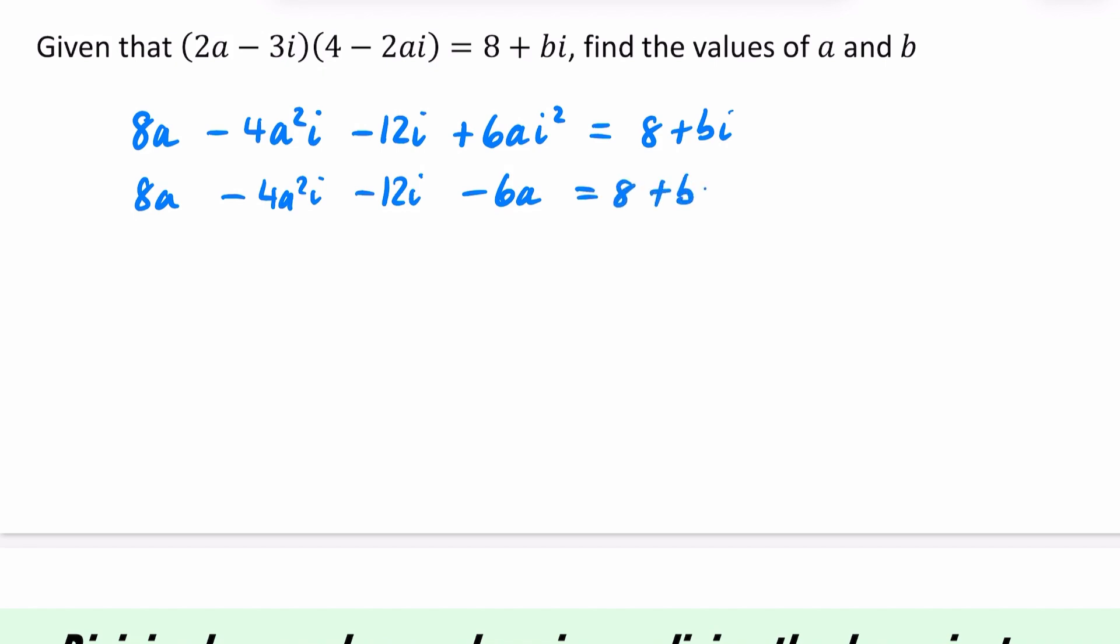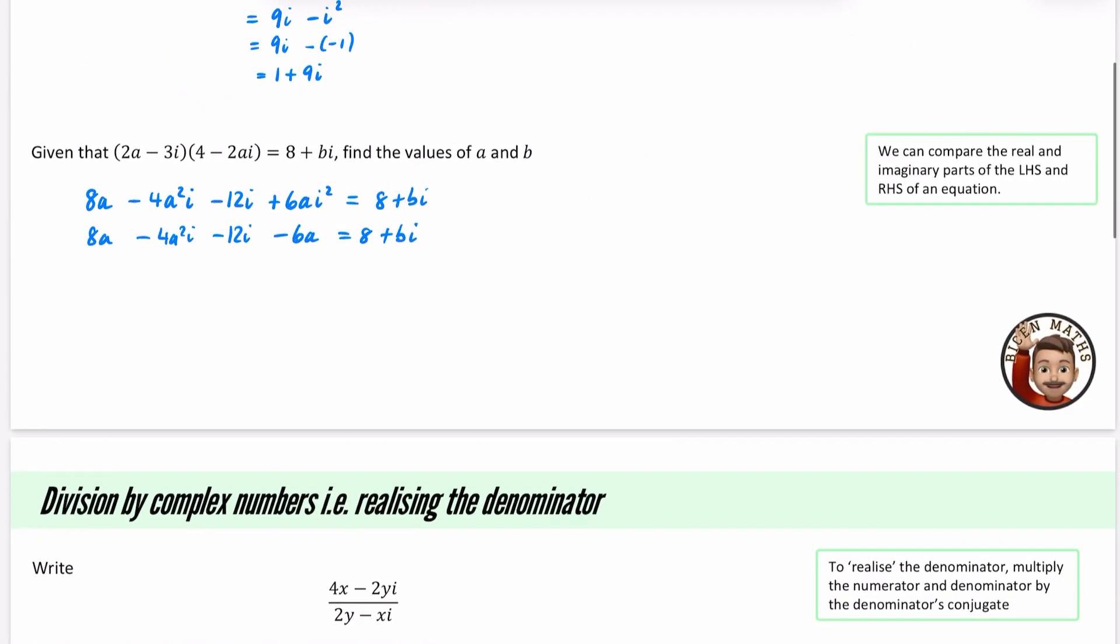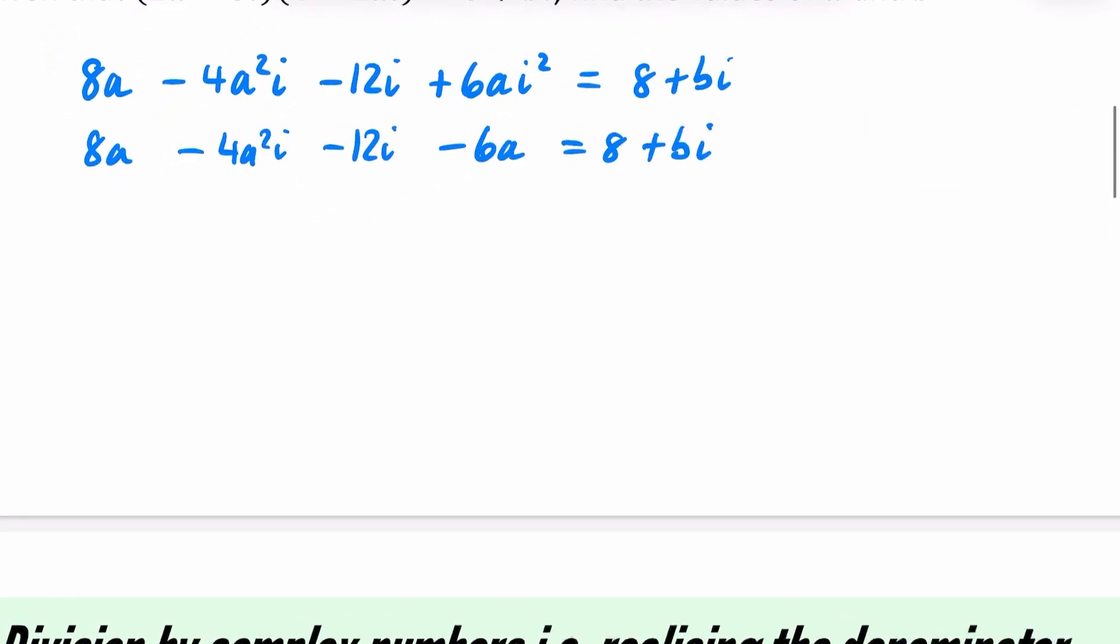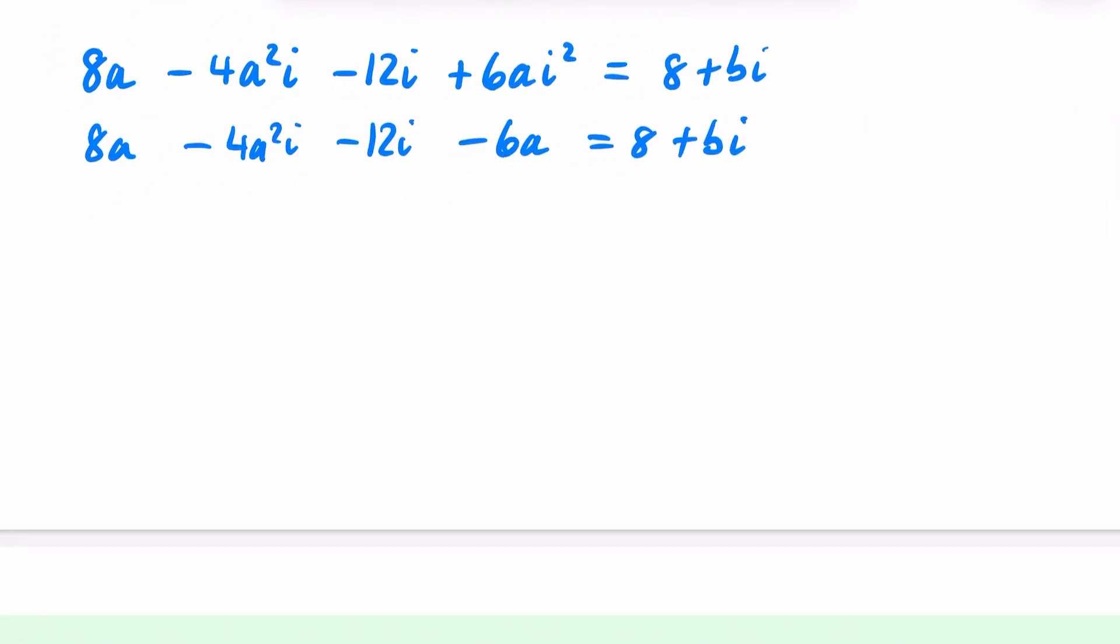So it is going to be an 8a. We then have a minus 4a squared i minus 12i. And I just said this would be a minus 6a is equal to 8 plus bi. And we can compare the real and imaginary parts of the equation that we've got. So for the real part, the 8 that we have here, this is real, and this is real, which tells me that 8a minus 6a, which is obviously just 2a, is equal to 8. So if 2a is equal to 8, then a is equal to 4.